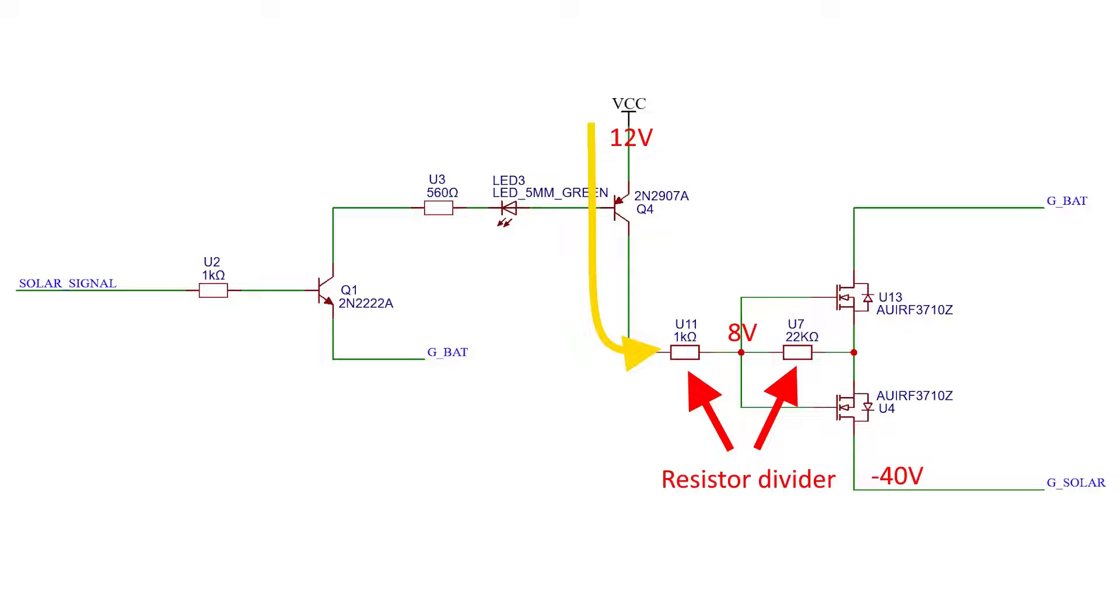Please note the 1k resistor works against the 22k resistor. Together they form a resistor divider, and the gate will receive a final voltage of around 8 volts when using a 40 volt panel like I do myself.